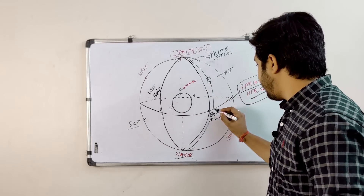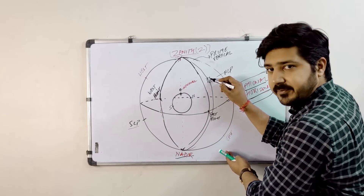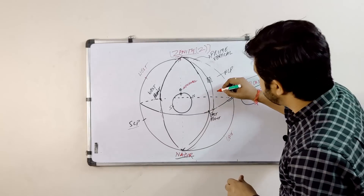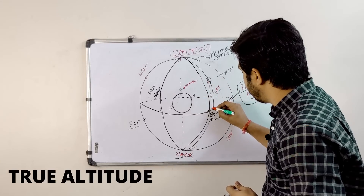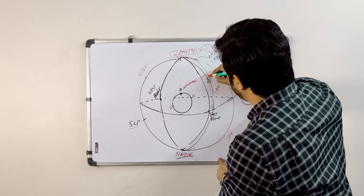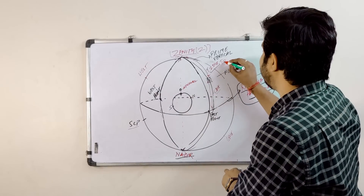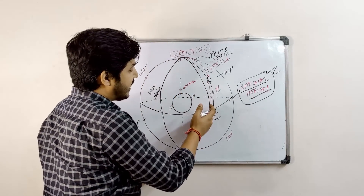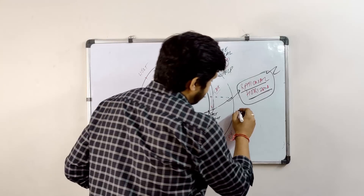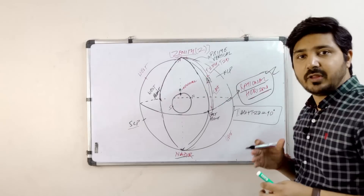From the rational horizon up to the center of the celestial body along the vertical circle, this is known as true altitude. From zenith down to this point is the true zenith distance, also called TZD. We already know that from zenith to the rational horizon is 90 degrees, which means true altitude plus TZD equals 90 degrees.